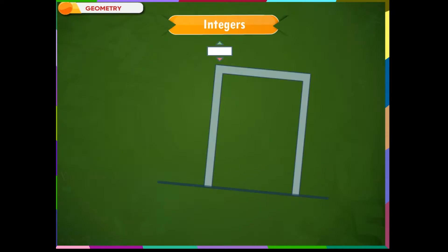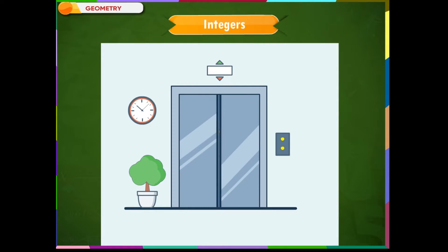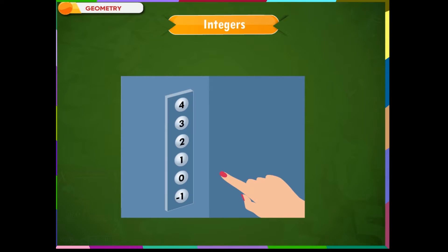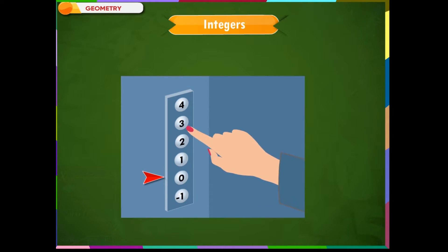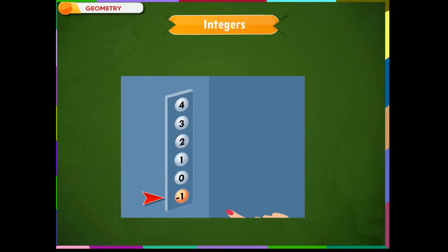We have all experienced passenger lifts. You must have noticed these kinds of buttons inside a lift. We take the ground floor, 0, as our reference floor. As we go up, the number of floors increases. As we go down, the number of floors decreases. When we go further down than the ground floor, we see negative numbers. This is quite similar to our vertical number line.